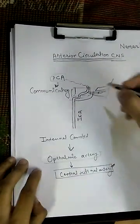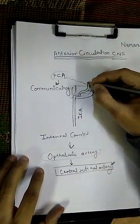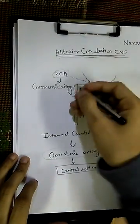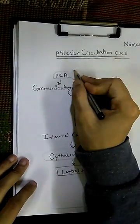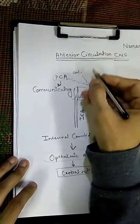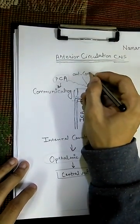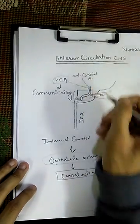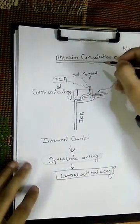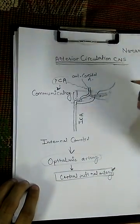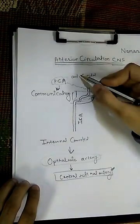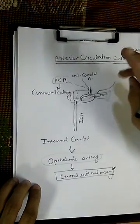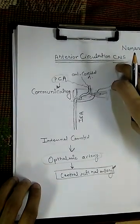There is one more branch — that is the anterior choroidal artery, which is going to supply the choroidal plexus.